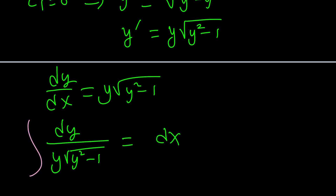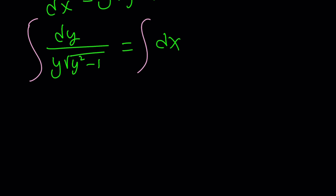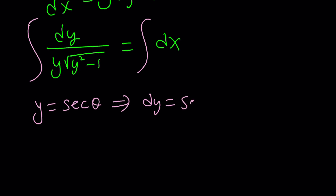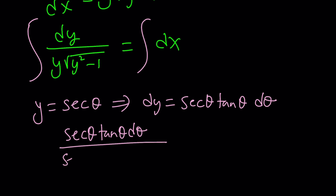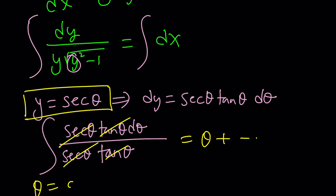Integrating both sides — the right side is easy. For the left side I'll use trigonometric substitution: let y equal secant θ, so dy equals secant θ · tangent θ · dθ. Substituting: secant θ · tangent θ · dθ divided by secant θ, and secant² θ minus 1 equals tangent² θ, so the square root of tangent² θ is tangent θ. Everything cancels and we're left with integrating dθ, which is just θ plus a constant.